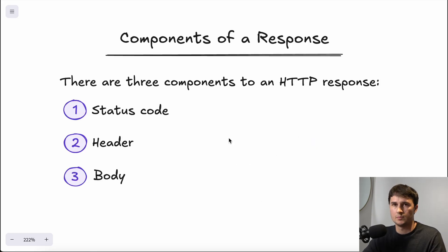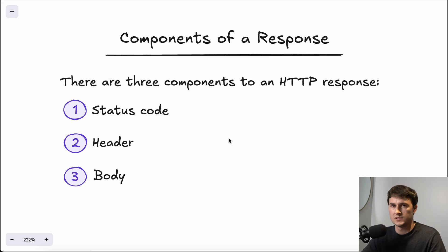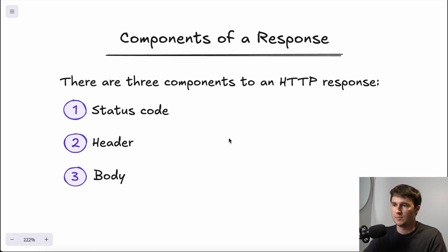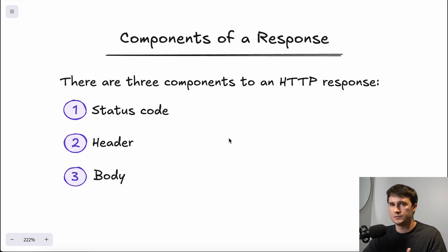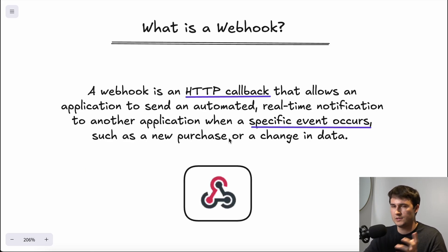The second component of a response is the header, which gives more detailed context to the request. Common response headers may include content length or content type. The third component is the body — the actual data returned. It can be in different formats as specified in the header, such as HTML or JSON.